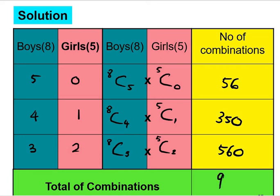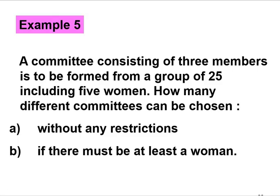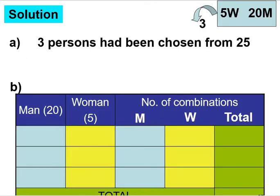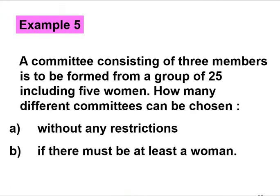Then we have to find the total of combinations, so the answer is 966. Next let's move on to example 5. A committee consisting of 3 members is to be formed from a group of 25 including 5 women. How many different committees can be chosen without any restriction? Without any restriction we can just calculate 25C3, so the answer is 2300.